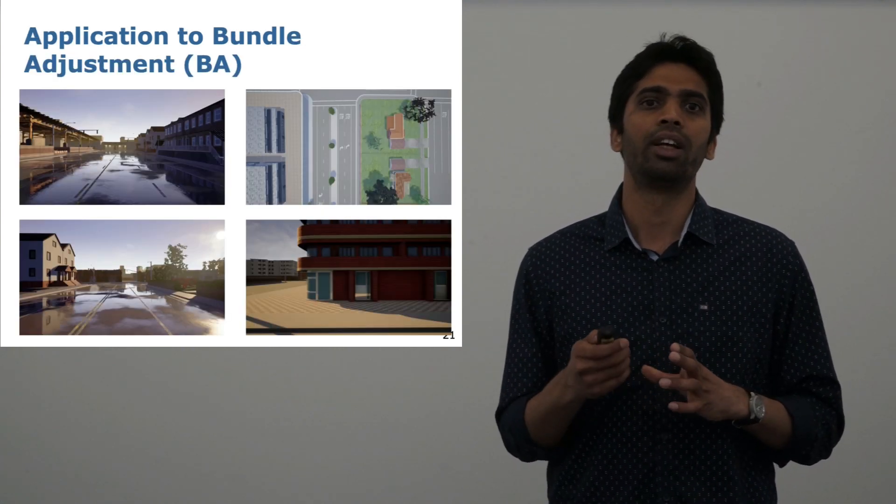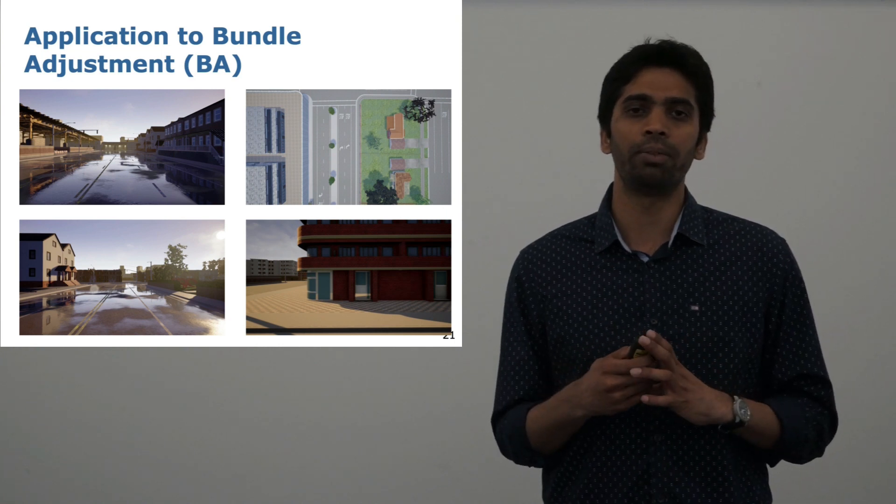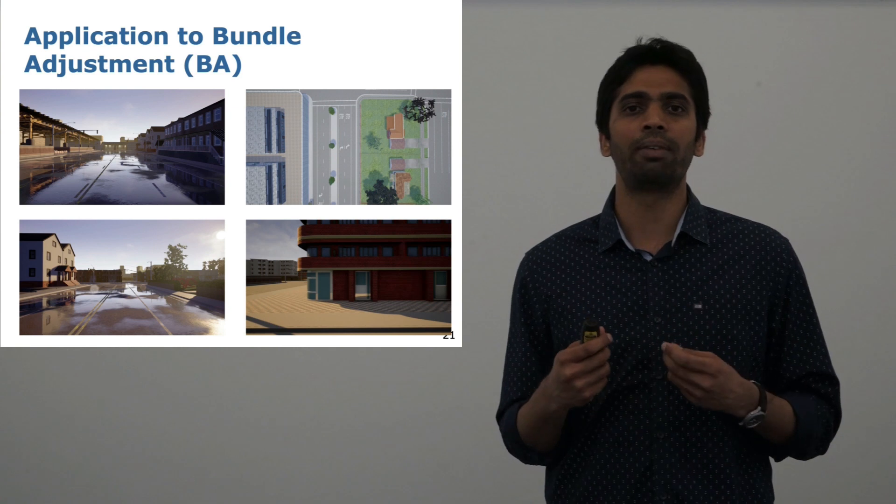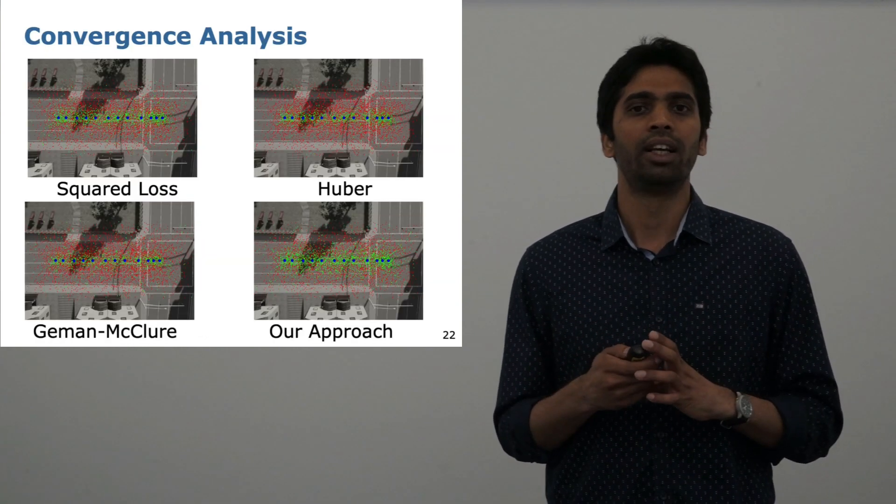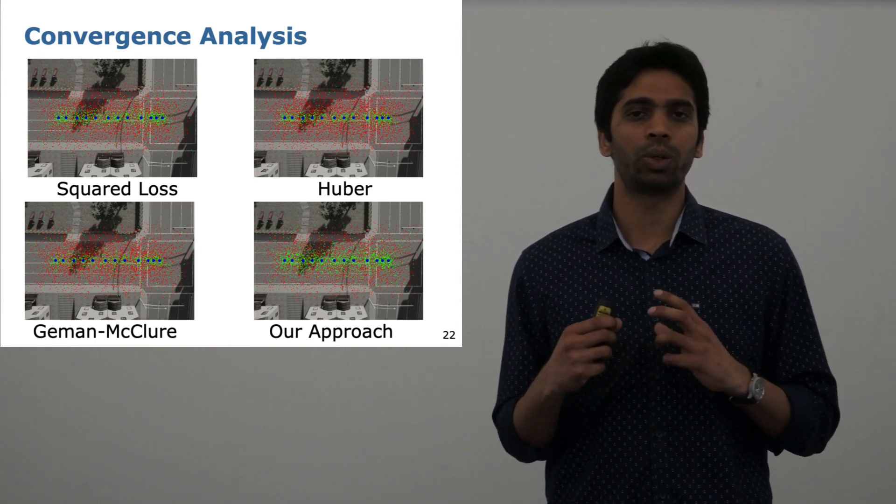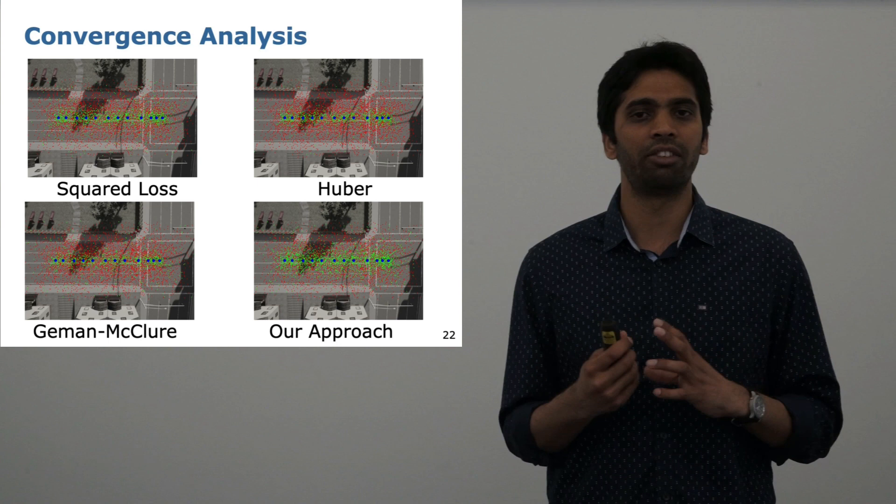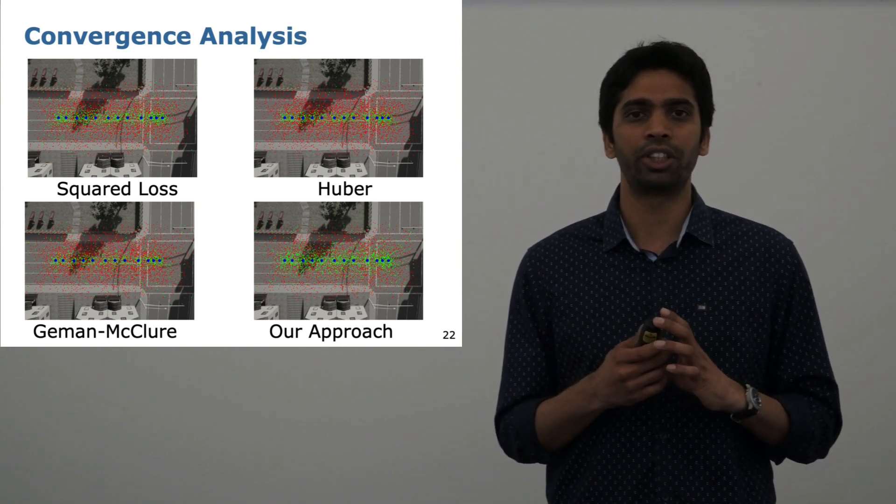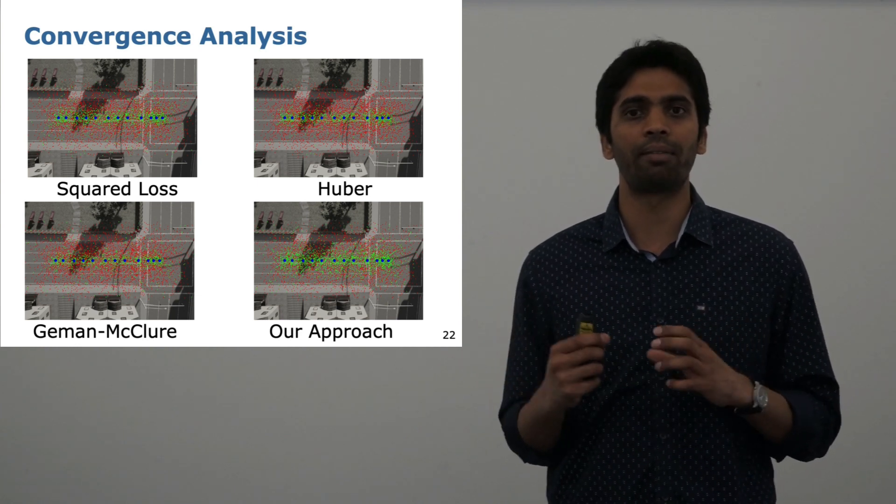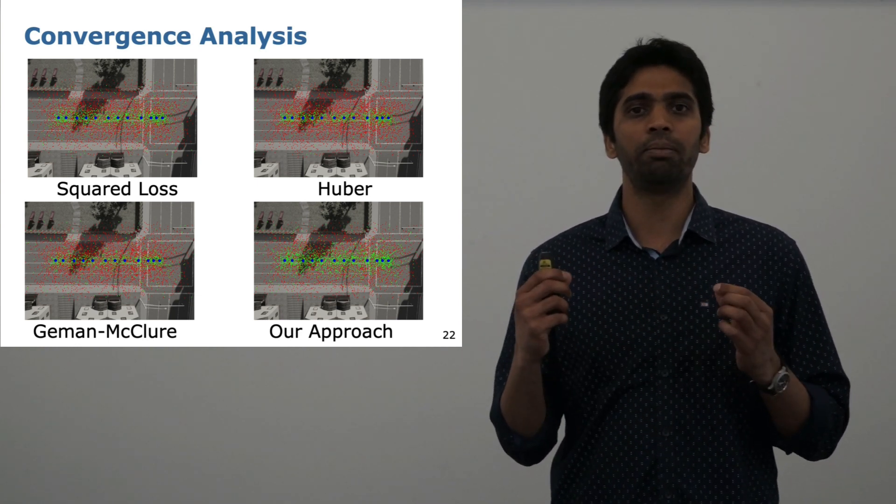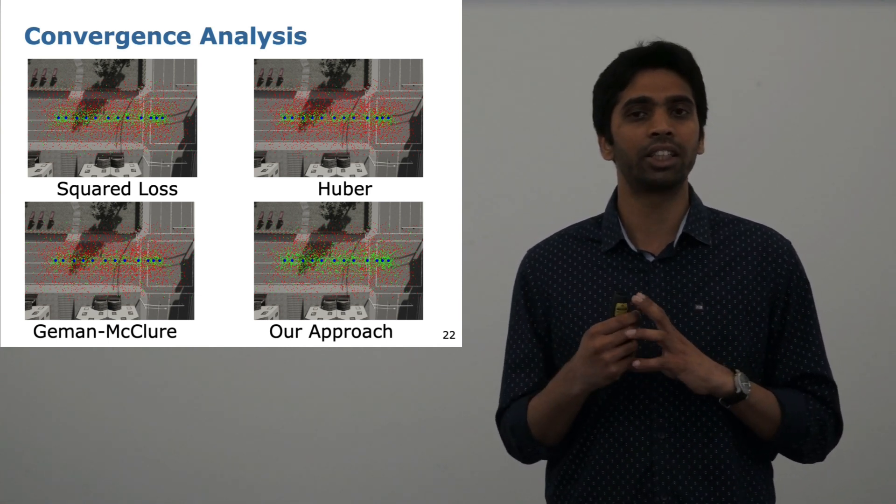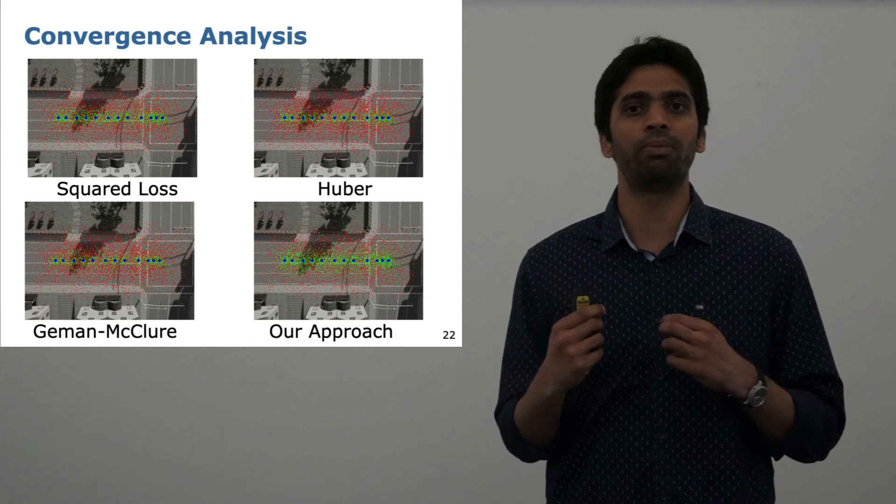We also tested this approach on a bundle adjustment problem on four different environments in the CARLA simulator. We used the CARLA simulator to have the ground truth poses. In this experiment, we did a convergence analysis to understand if our approach brings better convergence. What you see in this picture is that we start a bundle adjustment problem with various initial guesses for our camera poses. The green points in the images show those starting points which resulted in a successful registration, in a successful bundle adjustment result.